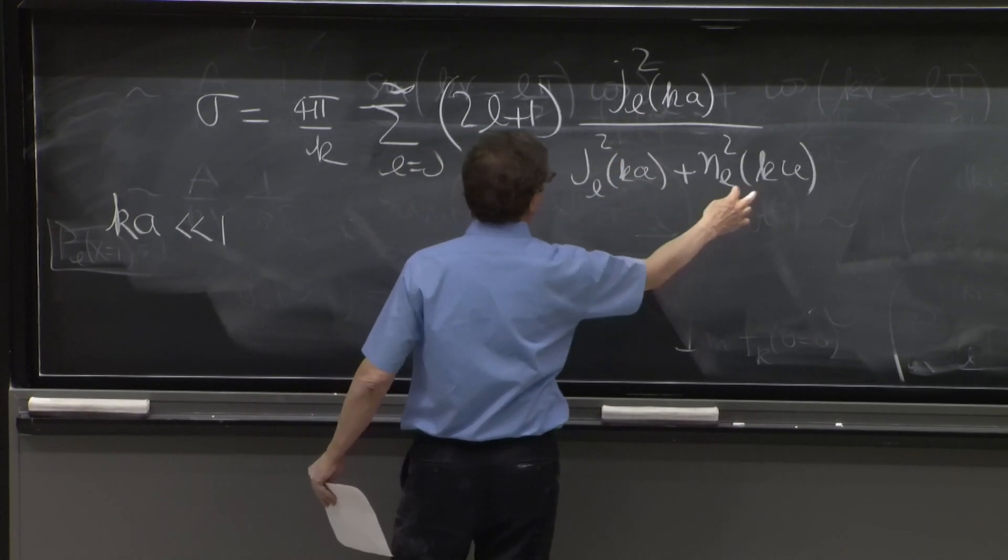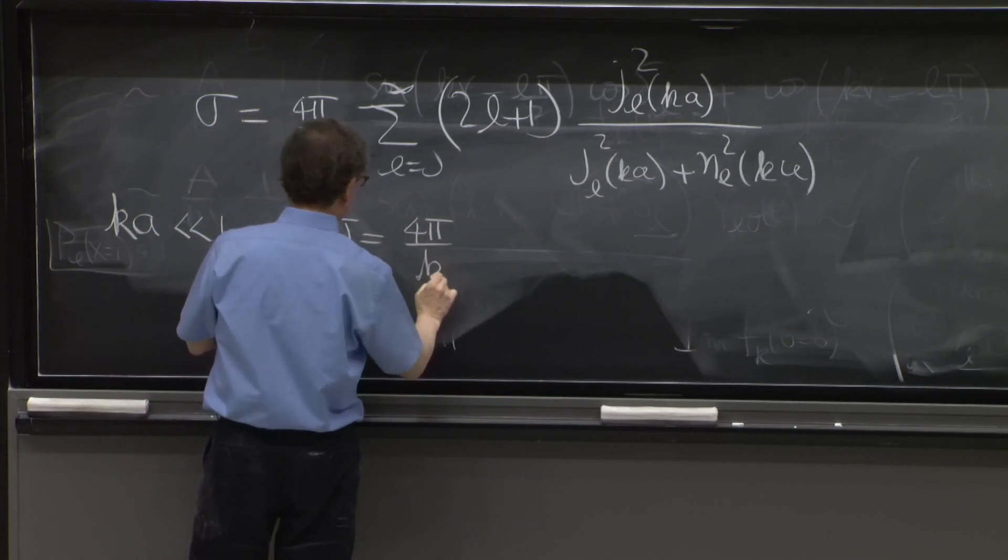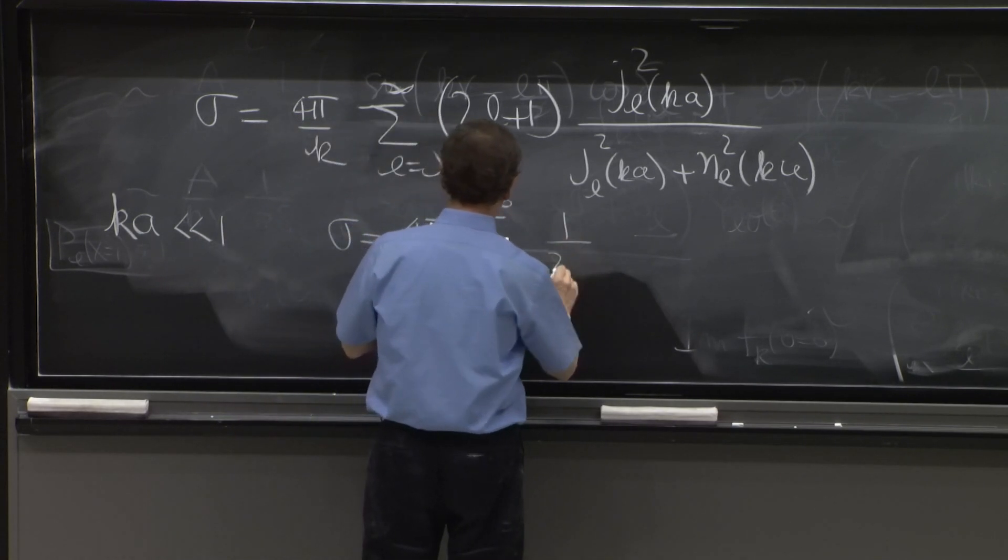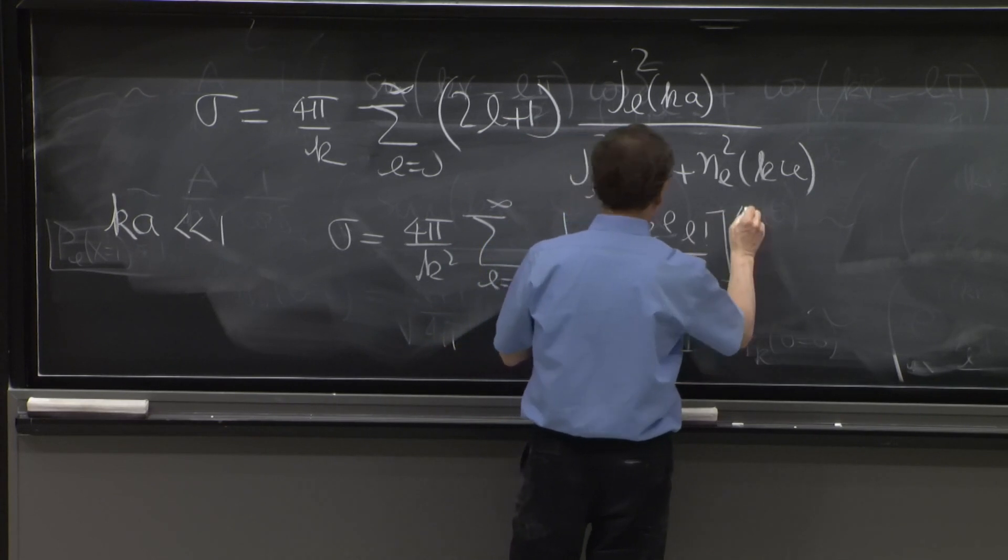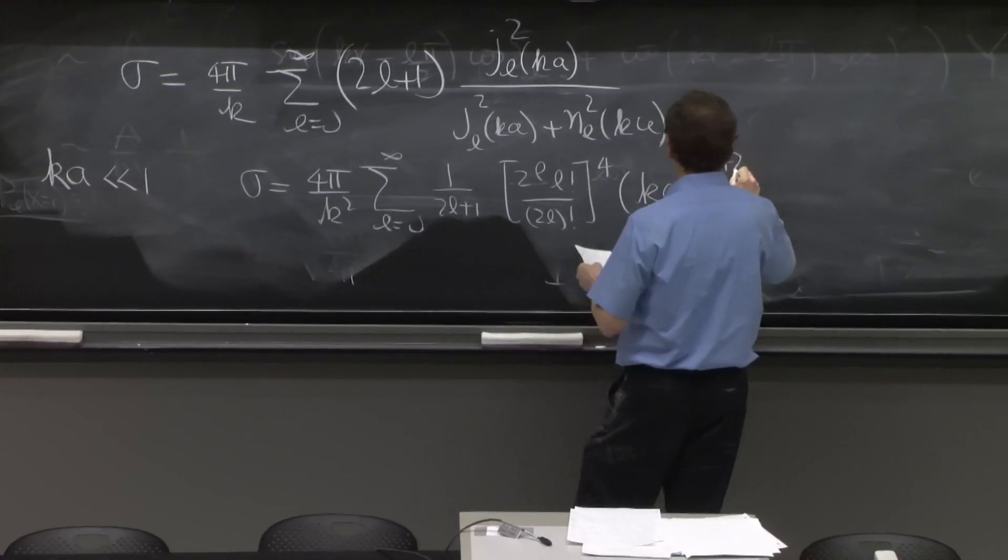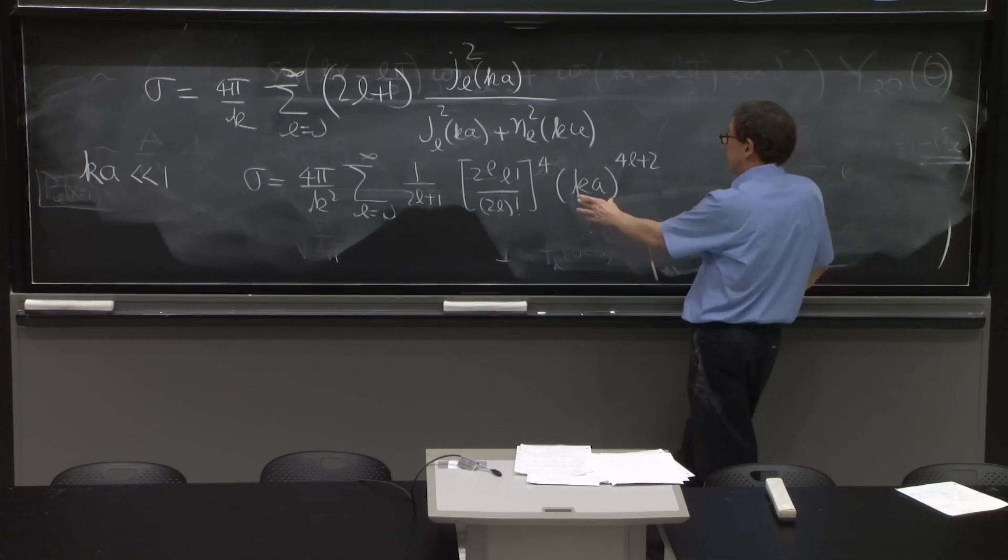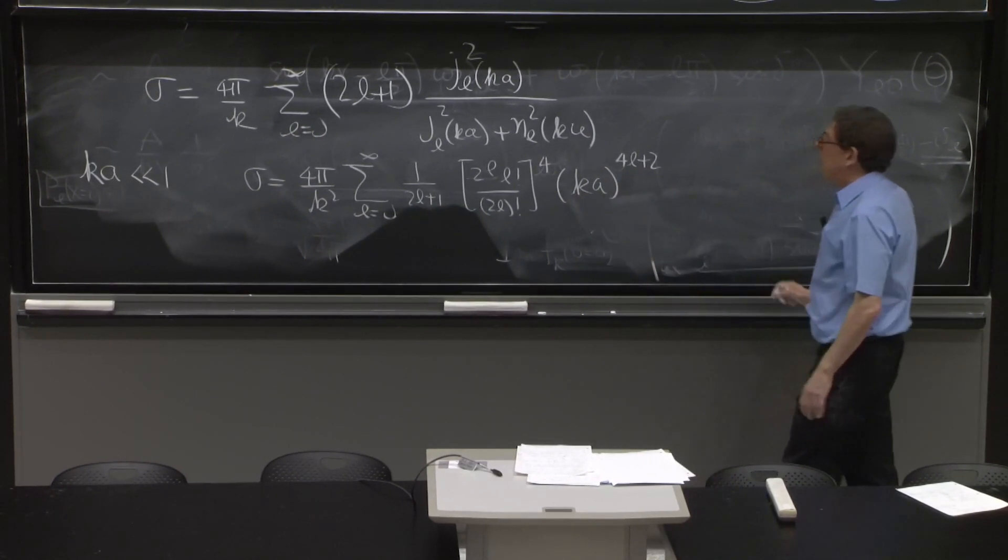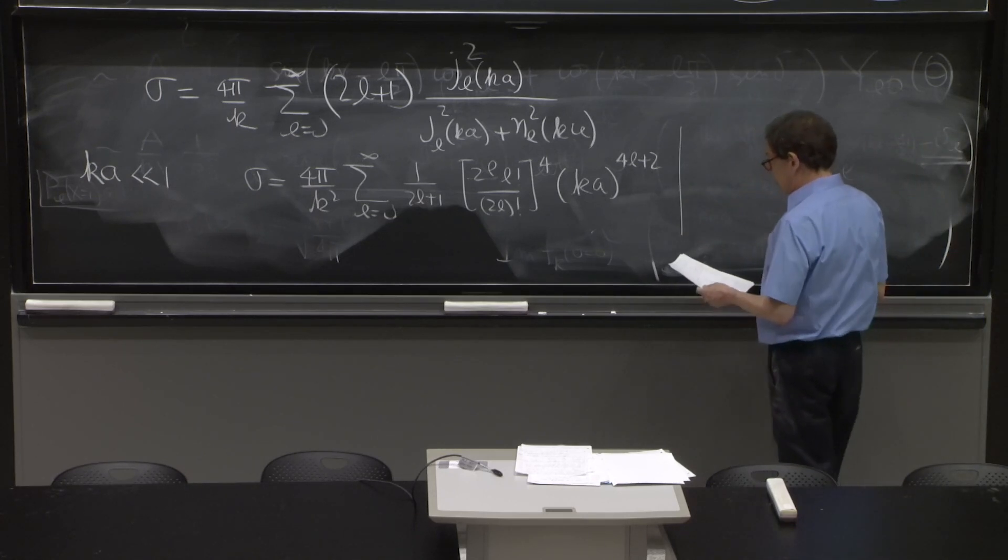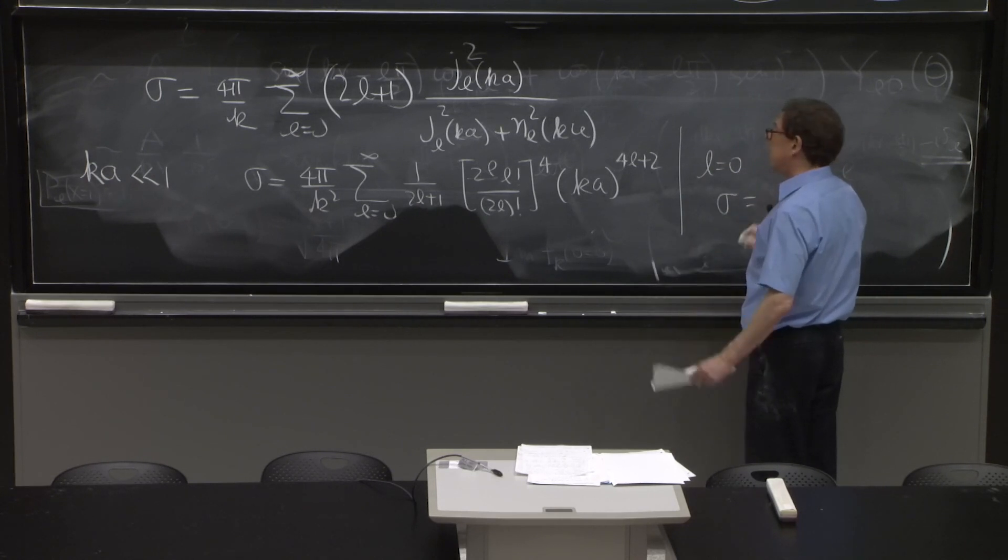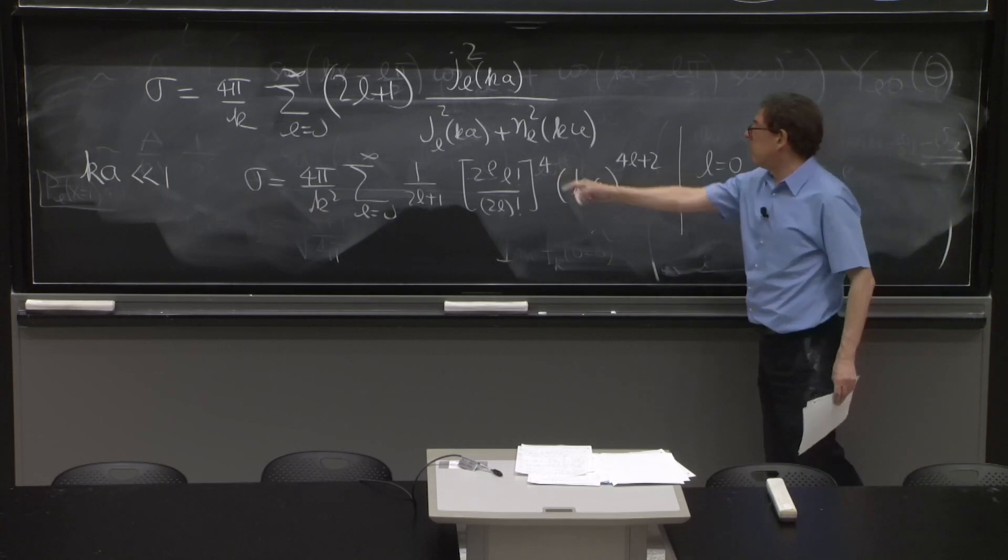You need the expansions of these quantities for small things. And they're easy to find. Basically, this remains finite. This becomes infinite. It dominates. It's not difficult. I'll write what one gets. It's 4 pi over k squared, sum over l equals 0 to infinity, 1 over 2 l plus 1, 2 to the l, l factorial, 2 l factorial. It's lots of mess of factorials. I'm sorry. Ka to the 4 l plus 2. And here is the question of convergence. If ka is much smaller than 1, in this case, this was the approximation. That will sure converge. The powers go up and up. So for l equals 0, it is interesting. It's the dominant one. So l equals 0 only.